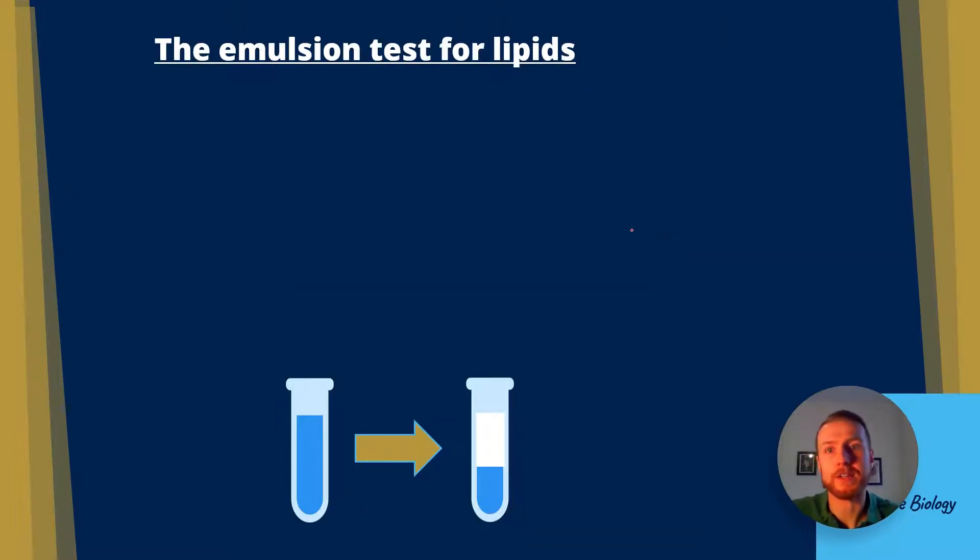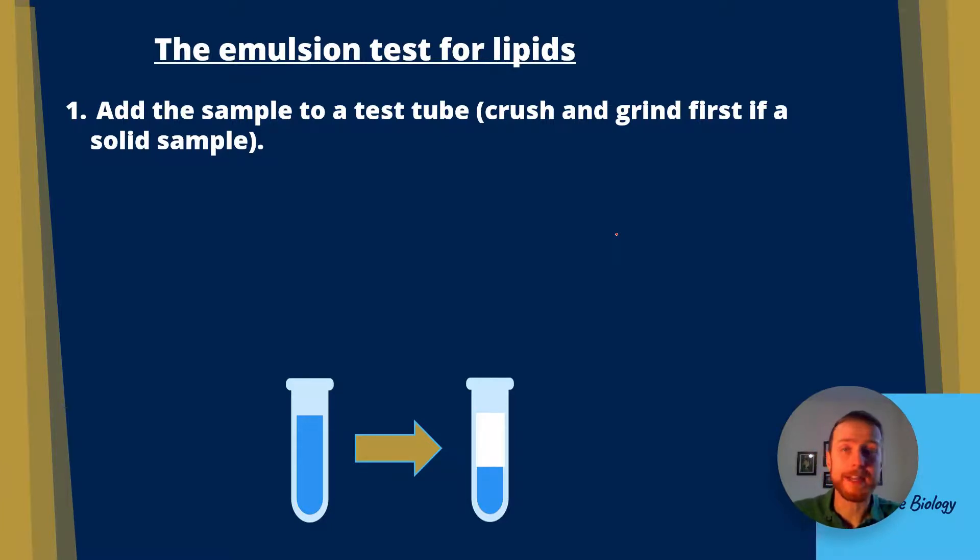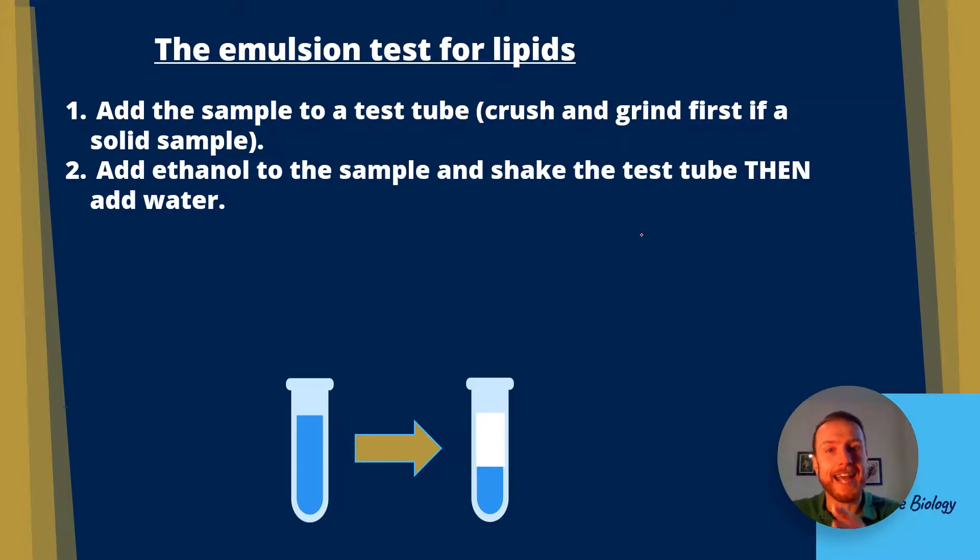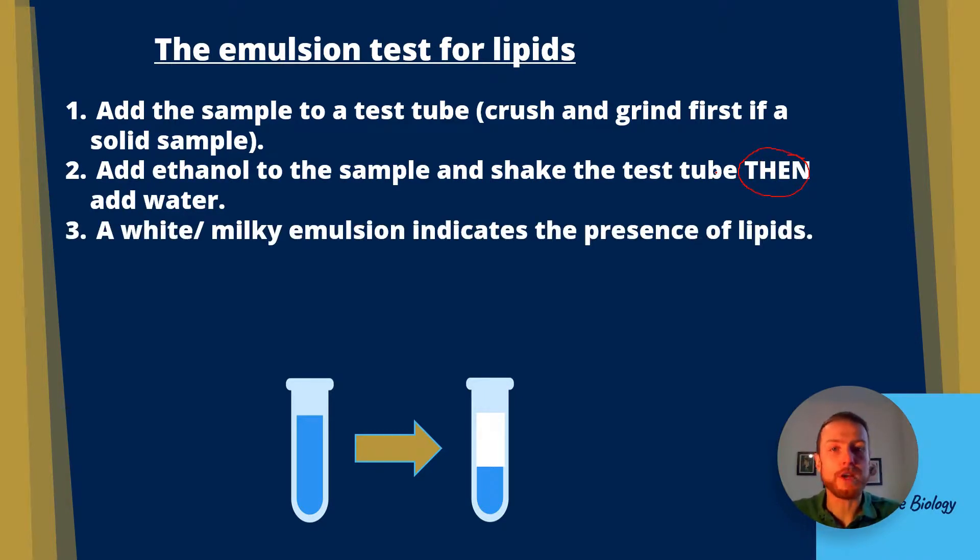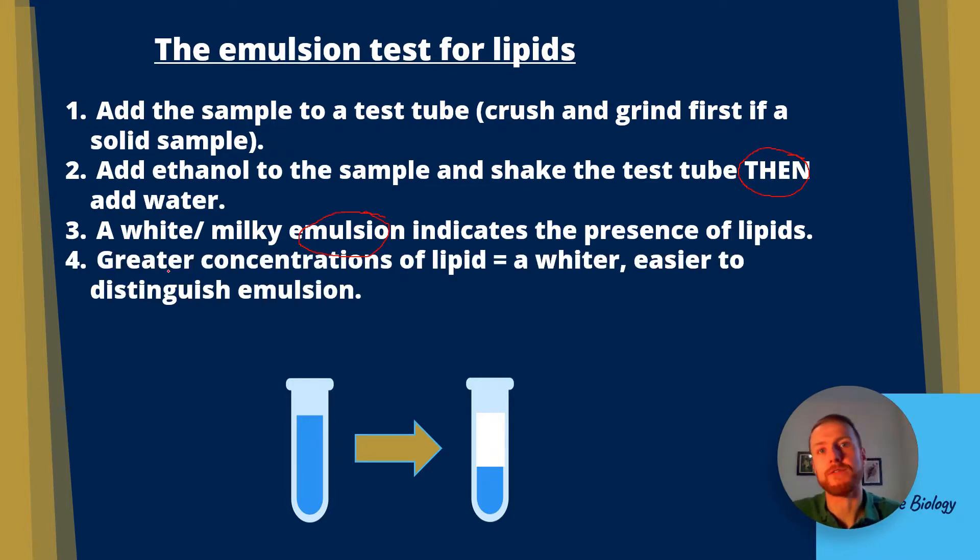The emulsion test for lipids next. Step one is to add the sample to a test tube. If it's a liquid, that's fine, but if it's something like a solid, like seeds or nuts, you'll crush those in a pestle and mortar first. Then you'll add ethanol to the sample and shake the tube. After this, and I've put here in bold, then add water. In the AQA A-level biology mark schemes, you often get a mark for saying you add ethanol first, then you add water. If you put it the other way around, you'll lose that mark. A positive result will be a white or milky emulsion. The key part of this is emulsion. I've listed this definition by looking at a past paper and seeing what AQA want. They want you to put a white emulsion, but they will accept a milky emulsion. Greater concentrations of lipid will give a whiter, more easily distinguishable emulsion.